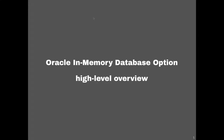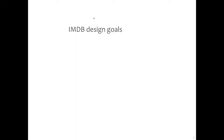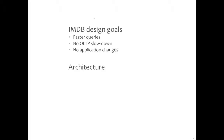The Oracle In-Memory Database Option High-Level Overview. The design goals are to give faster queries without an OLTP slowdown and without requiring you to change your applications — that's really the point of the in-memory database feature. The architecture adds a column store to the existing SGA that sits side-by-side with the row store that's been there for three decades, and the cost-based optimizer is aware of both of these memory structures.